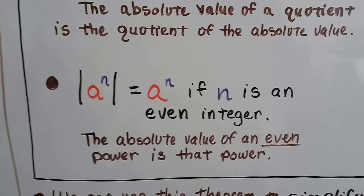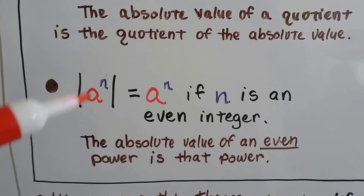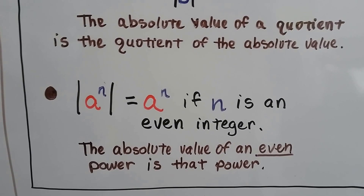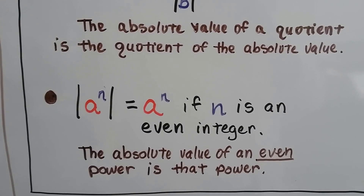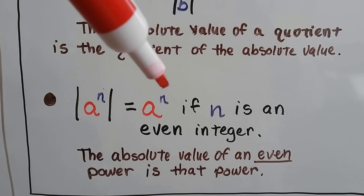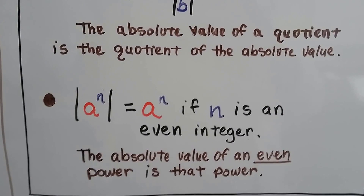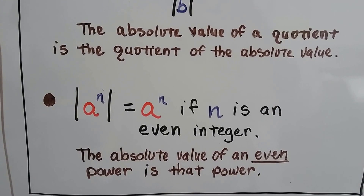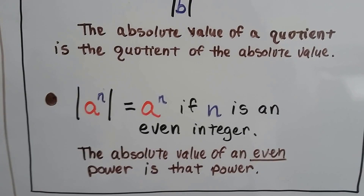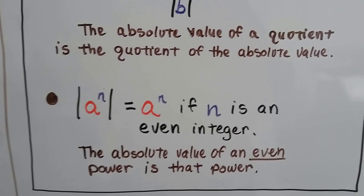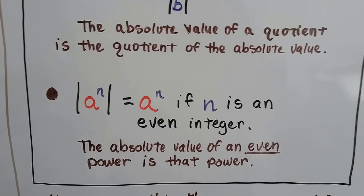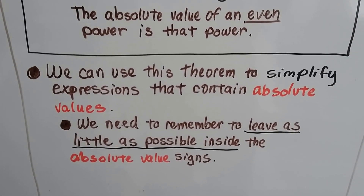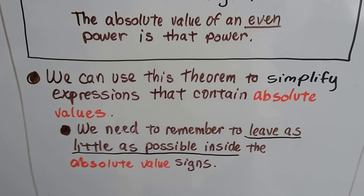And the last property is: the absolute value of a to the nth power equals a to the nth power if n is an even integer — 2, 4, 6, 8, 10, 12 — as long as it's an even number. The absolute value of an even power is just that power. We can use this theorem to simplify expressions that contain absolute values.